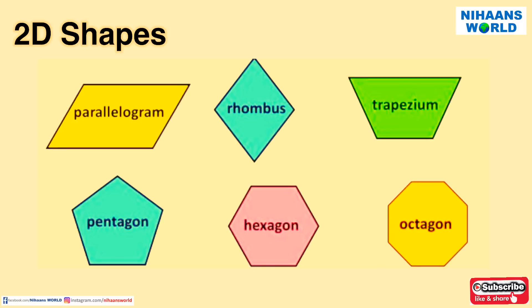Now let us look at some more 2D shapes: parallelogram, rhombus, trapezium, pentagon, hexagon, and octagon.